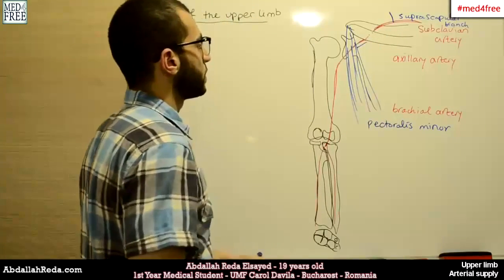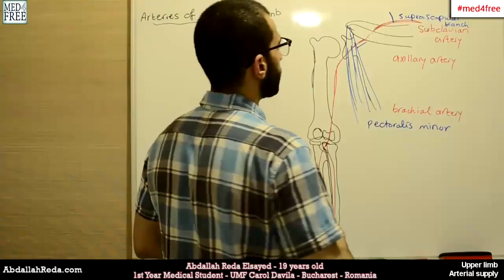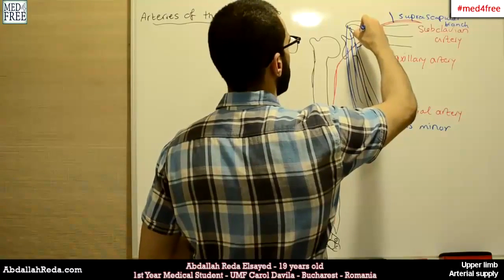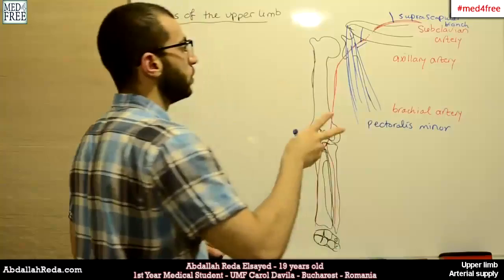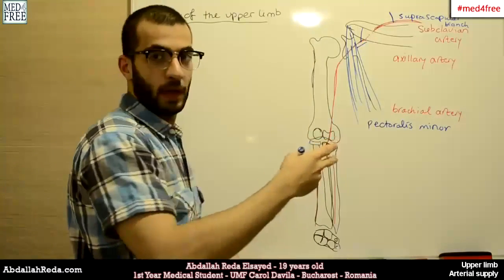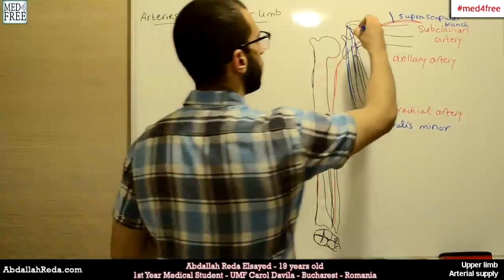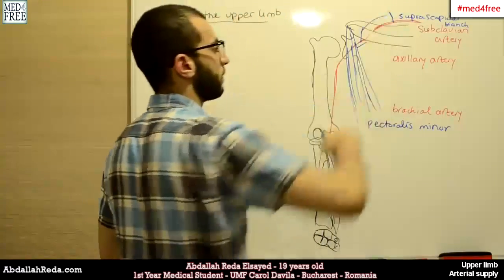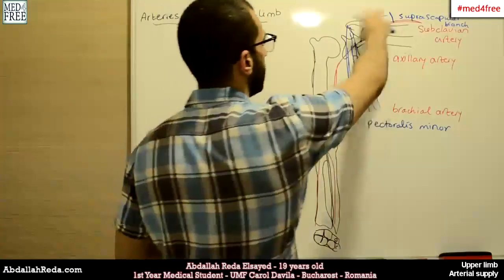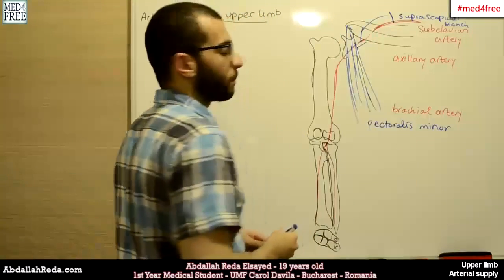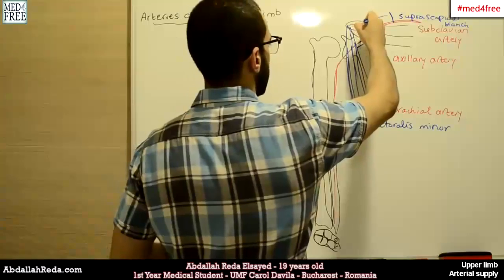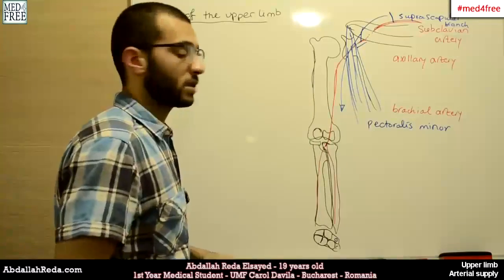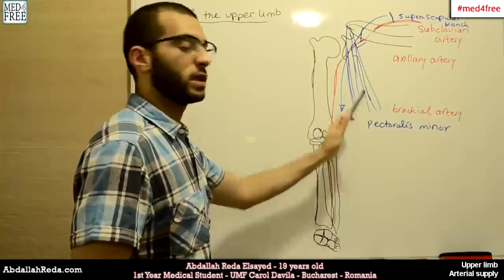Most of the branches of the axillary artery emerge from the suprapectoral region. For example, we have the supreme thoracic branch. This branch emerges here and gives two other branches — one deep and one superficial. The superficial one will anastomose with the suprascapular branch and will supply the upper part of the scapula and the muscles found there. The deep one will descend and supply the muscles on the lateral side of the thorax, such as serratus anterior and the intercostal muscles.